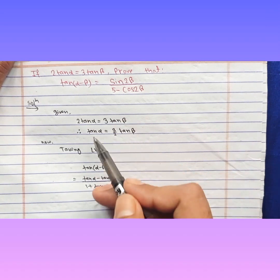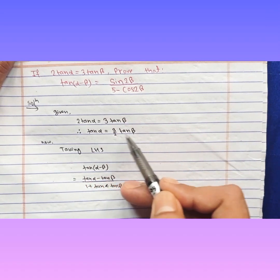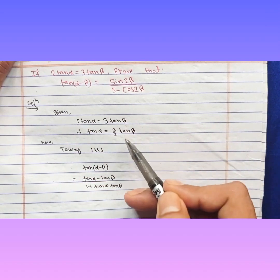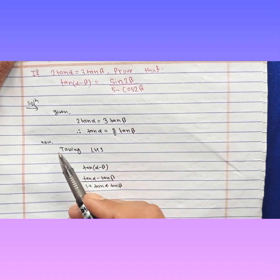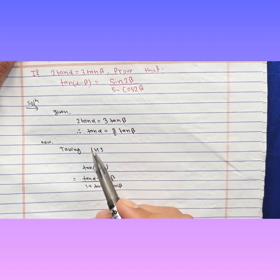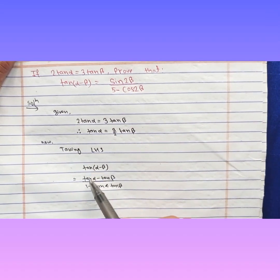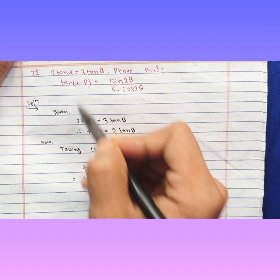Given: 2 tan α equals 3 tan β, which can also be written as tan α equals (3/2) tan β — meaning the 2 is transferred to the other side. Now, taking the LHS...